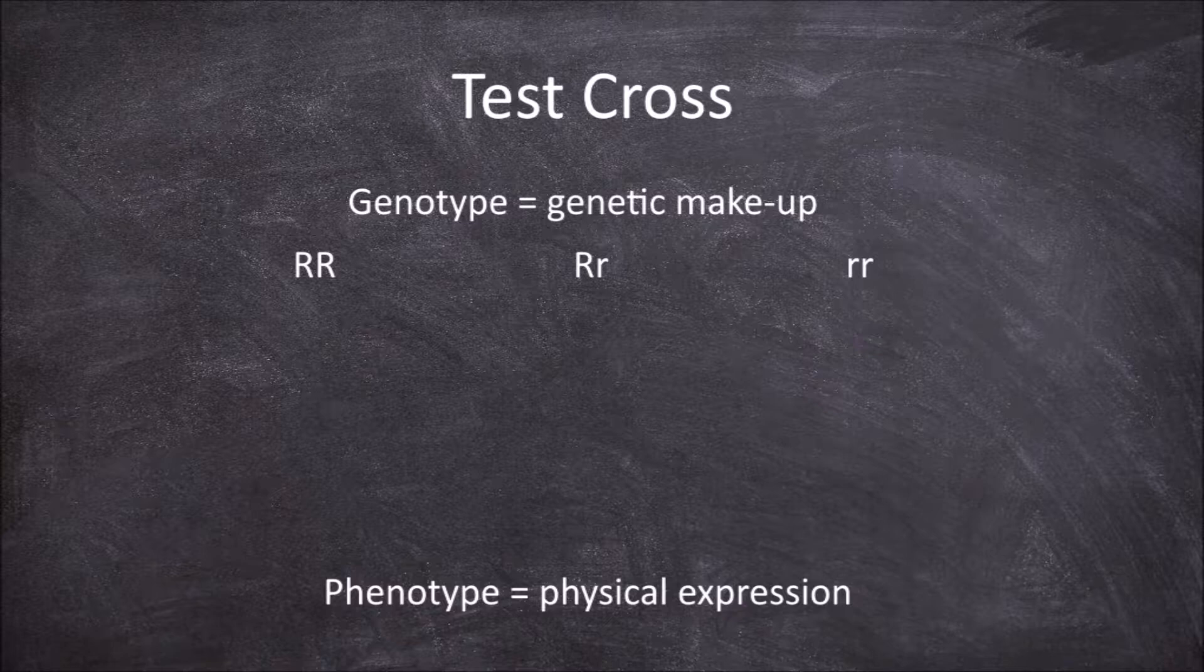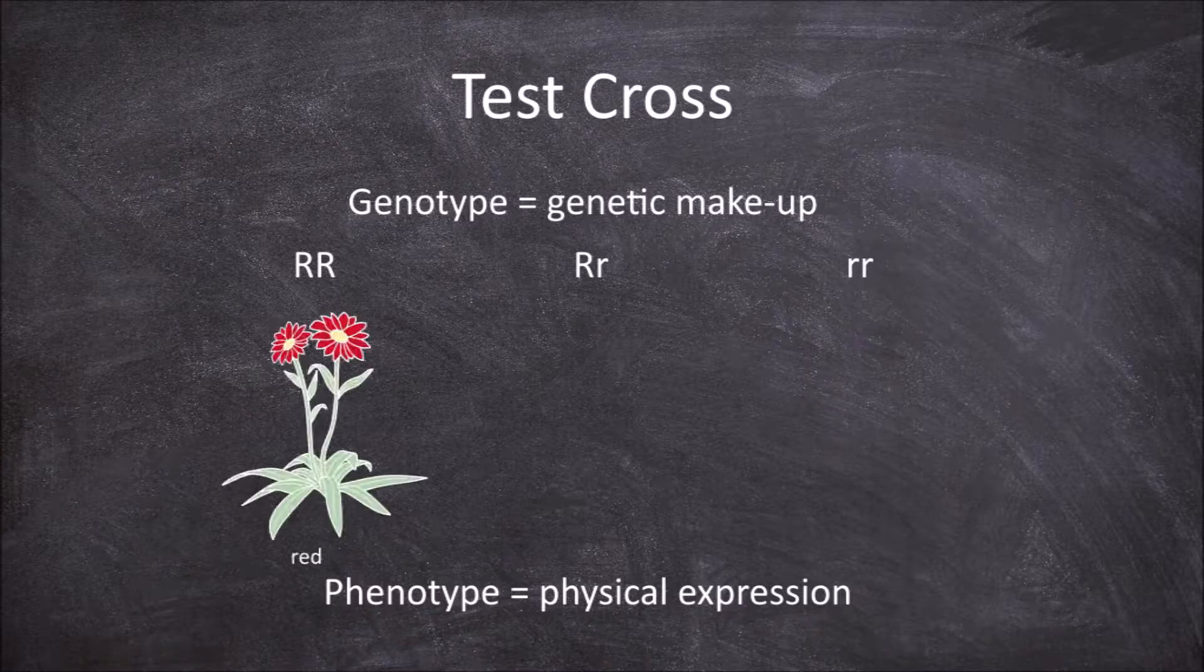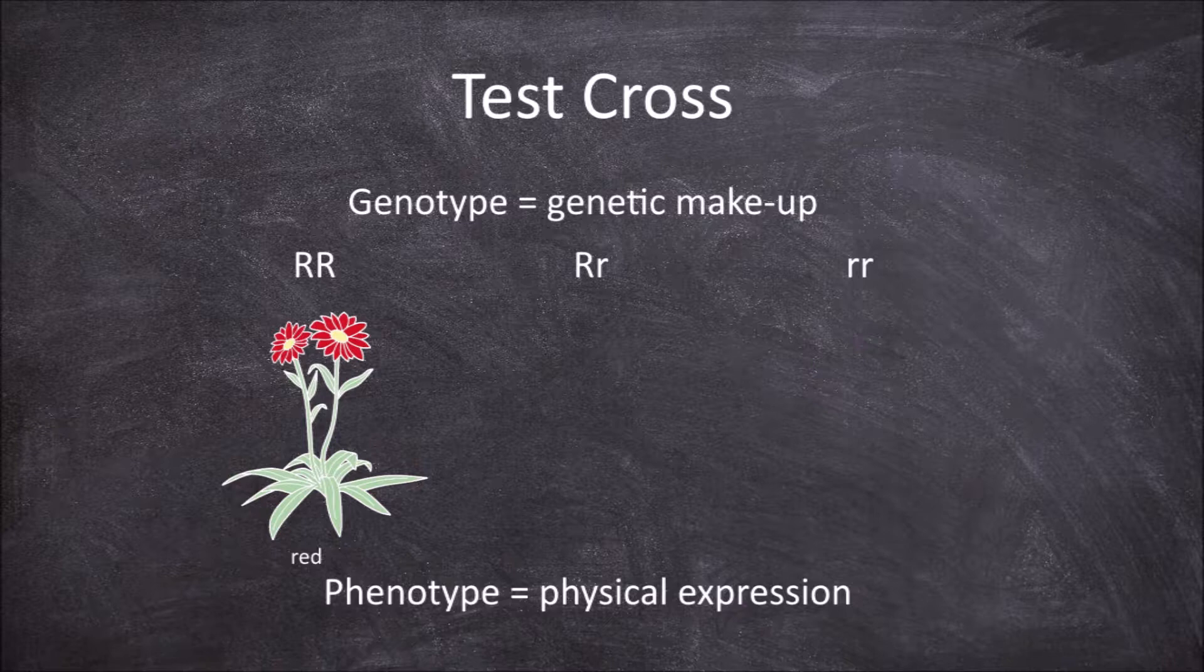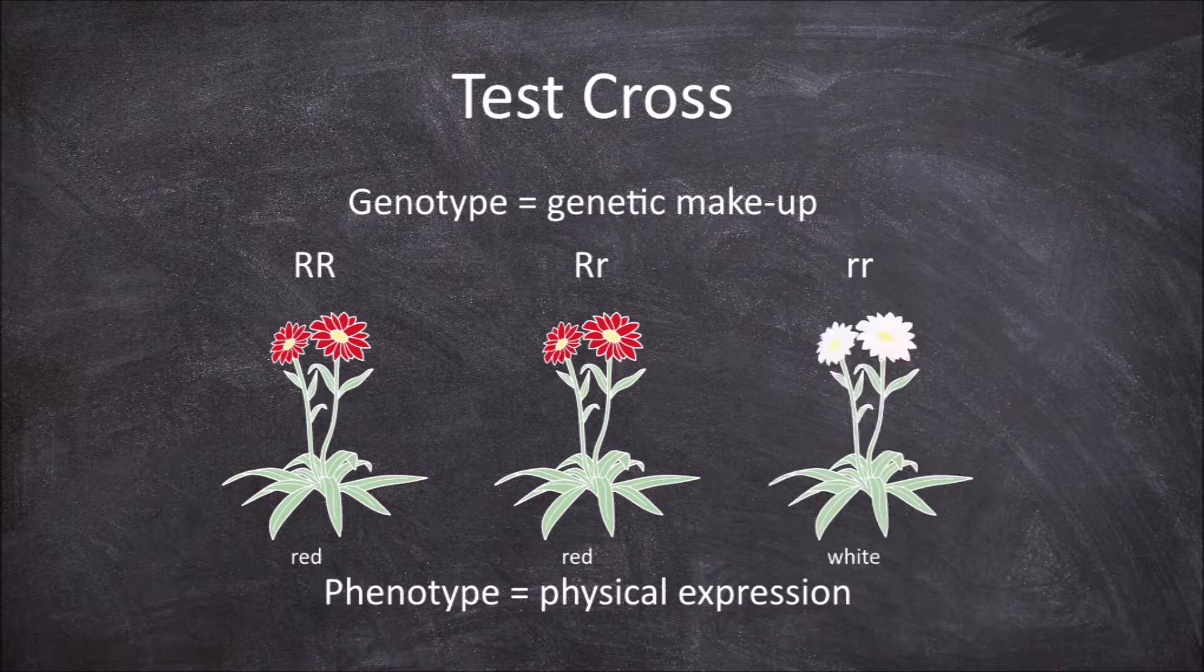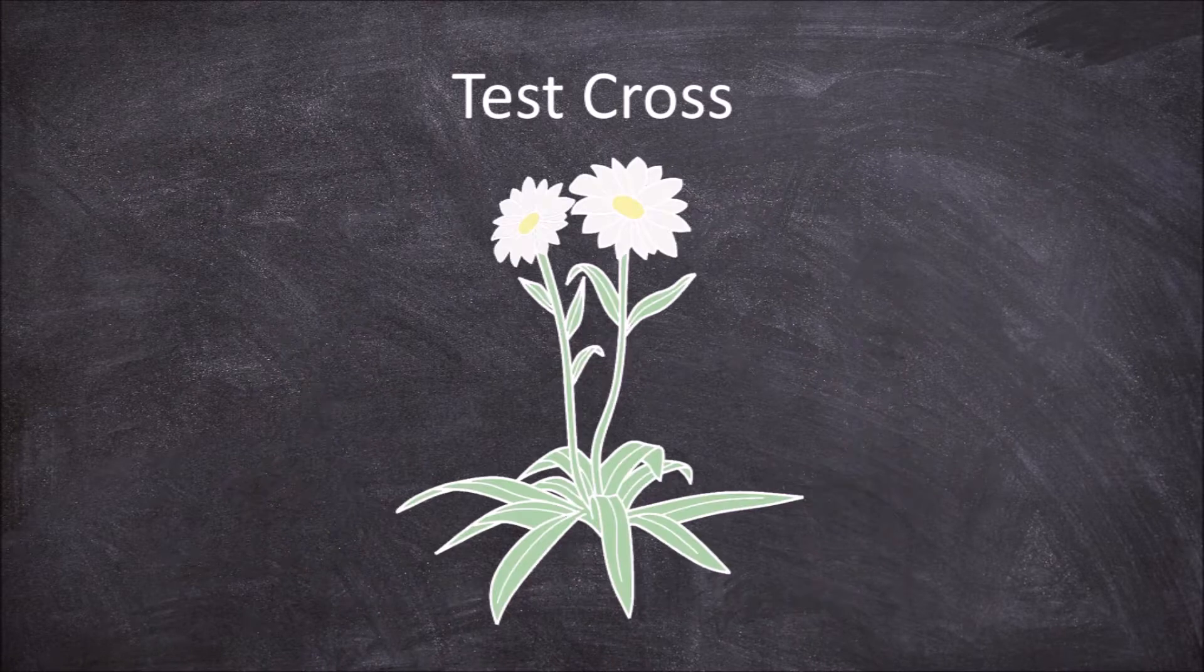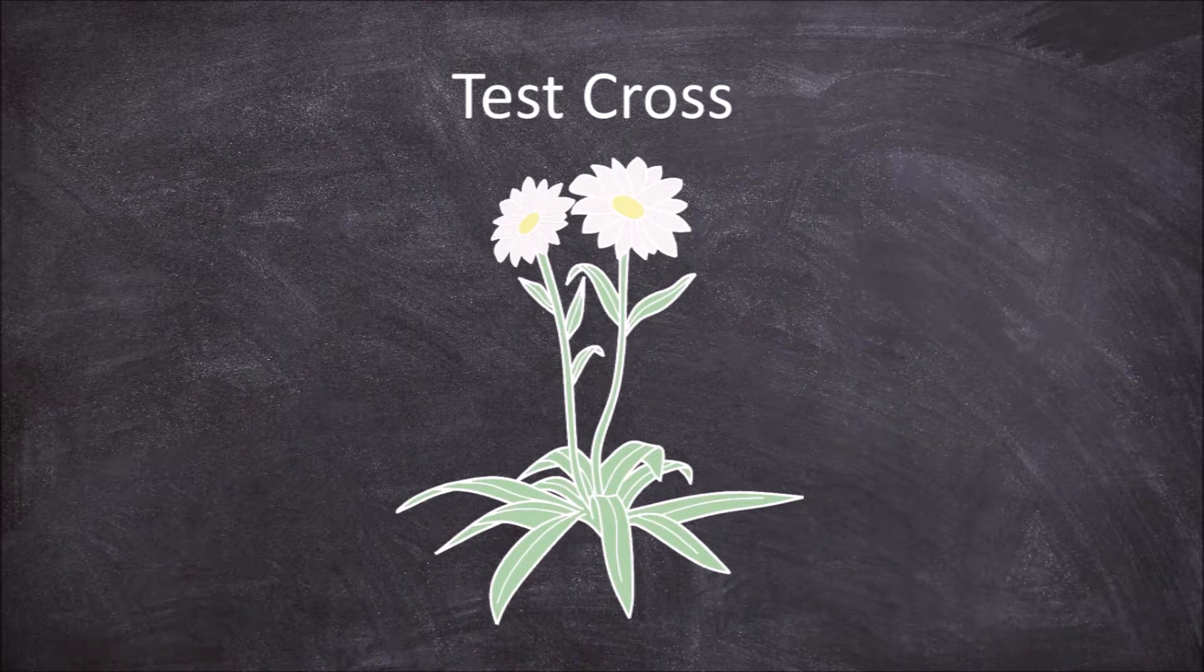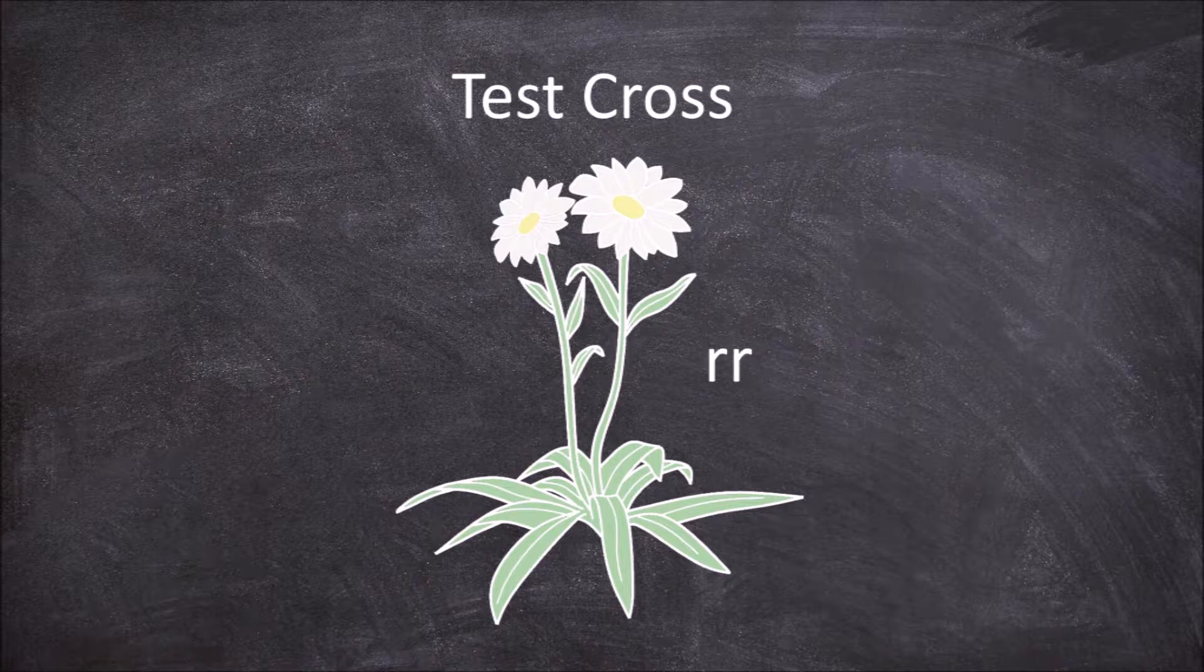Those with two big R alleles only have alleles that code for red flowers and express this. Since big R is dominant over the recessive little r, the big R little r plant would also express as having red flowers. Those with two recessive little r's would have white flowers. In this example of flower colour, if we have a plant with white flowers we know they must have two recessive alleles as that is the only way the plant would be able to have white flowers.